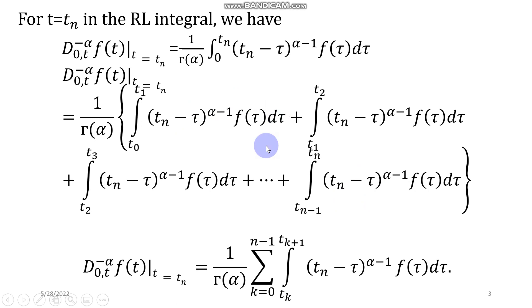Sum of all of these integrals can be written using this summation sign, where k starts from 0 to n minus 1. If you apply these terms on the integral, you will have all of these integrals given in this state.